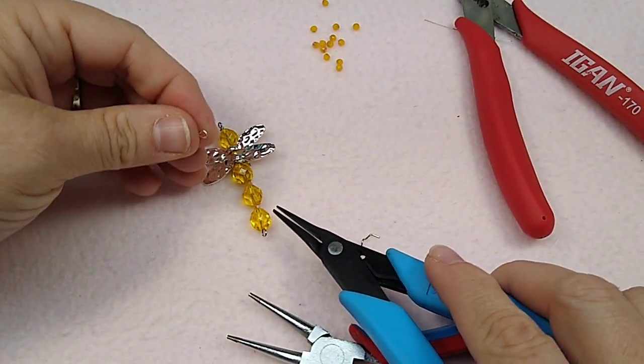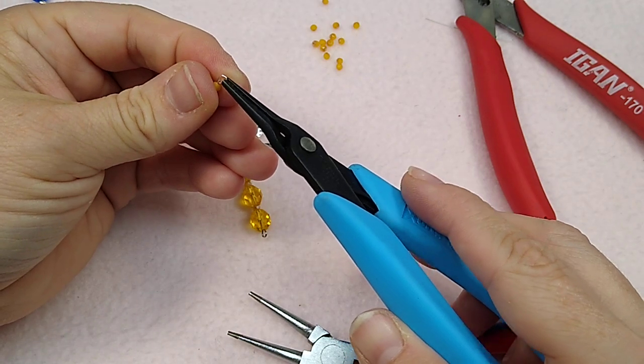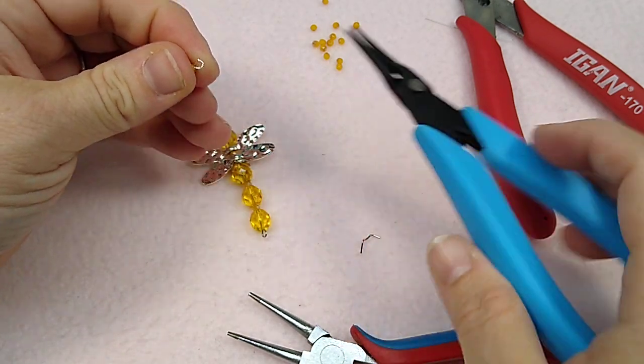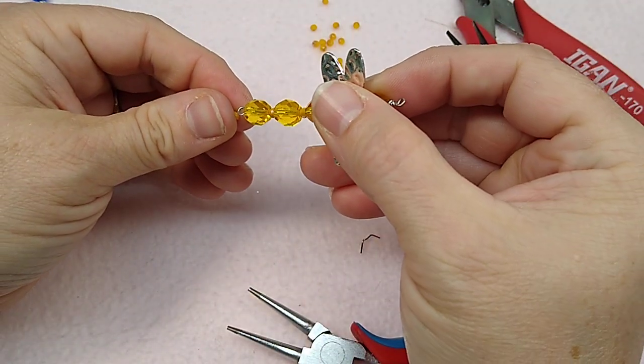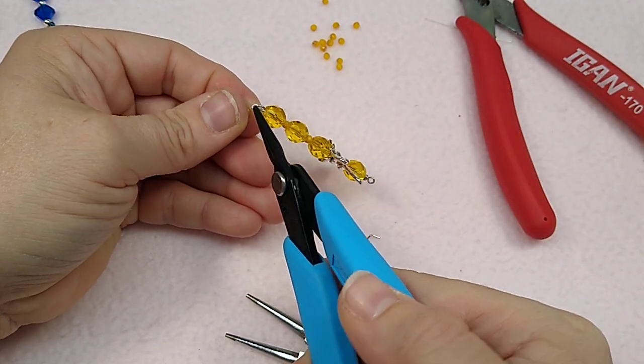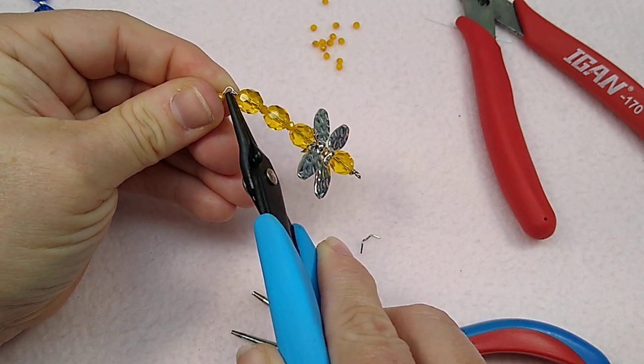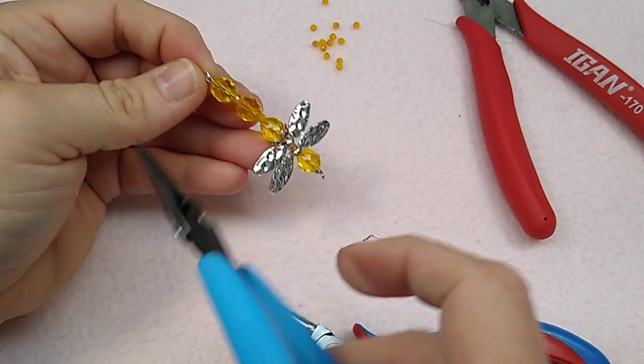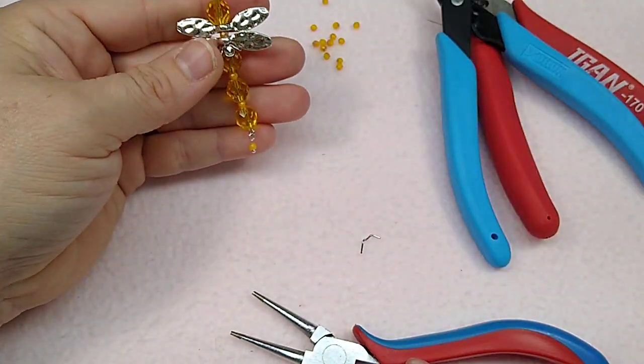And then I'm going to open it. I don't want to open this one because I don't want to loosen those beads at all. Okay. If I open that, it's going to loosen those beads and make my dragonfly not as tight. I'm just going to hang that from the bottom. Close it up to make sure it's closed really good. And that's cute.